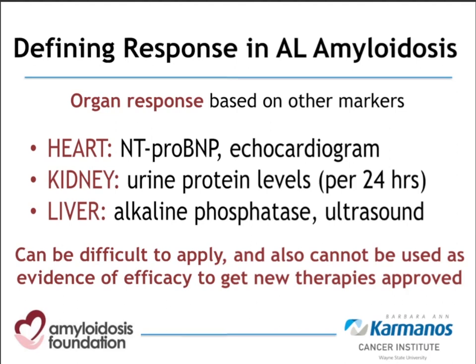The issues with assessing organ response are that they can be difficult to apply. NT-proBNP and urine protein levels can fluctuate widely during treatment for reasons that may or may not directly relate to amyloidosis. You want to follow them serially and get a sense over time whether they're achieving certain thresholds used to define response. None of these endpoints are currently usable as endpoints for clinical studies to get drugs approved, making it difficult to consistently assess the degree of benefit different therapies offer.